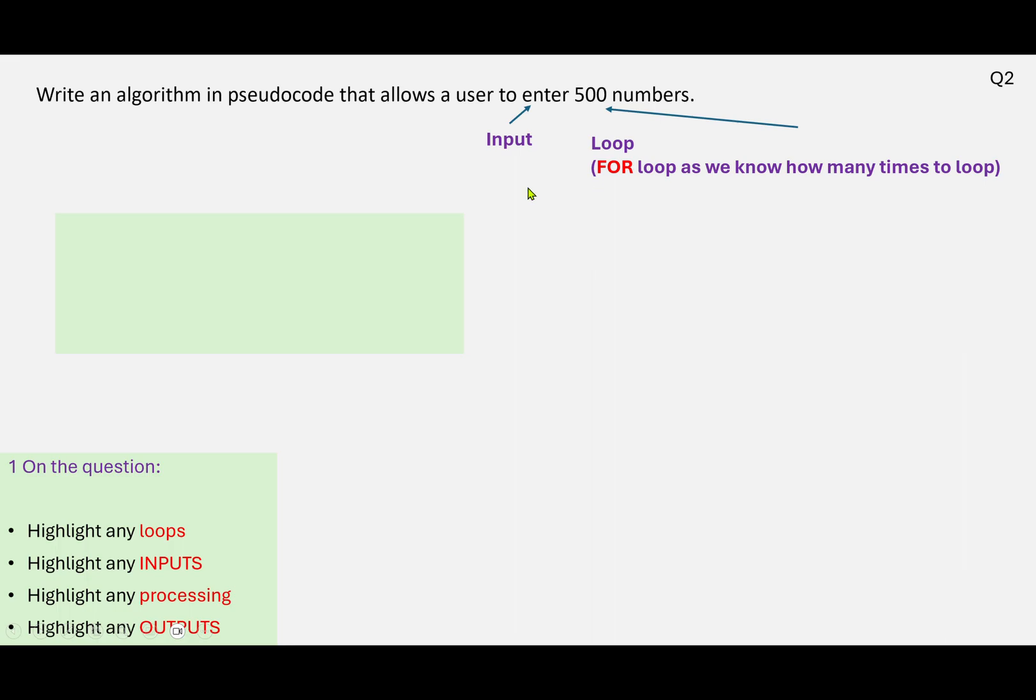So we don't input anything before the loop starts, so we need to start off with a loop. Now we know we can use a for loop, because we know that we've been told in the question we need to repeat 500 times, so we can use a for loop for that.